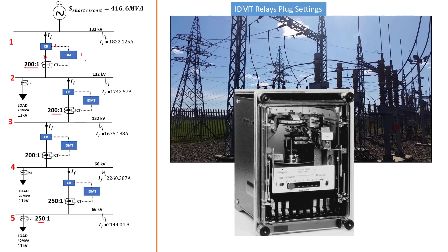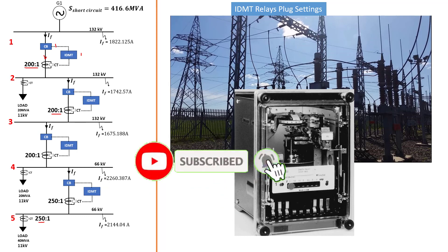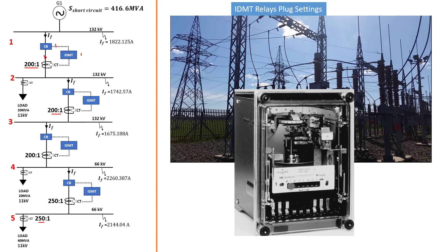The IDMT relay must operate based on the settings that are set on it. I have a previous tutorial on the plug settings of an IDMT relay — you can find the video in the description box to get yourself up to date. In this tutorial we're going to see how to determine the plug settings for this IDMT relay so that it can react on time when there is a fault current. Now, what we're going to do first is arrange this network into a layout that will facilitate calculating our IDMT relay settings.